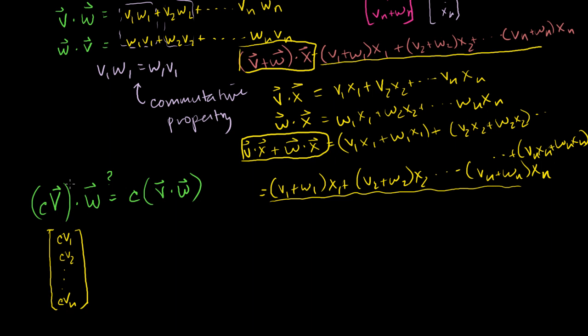And then the vector w, we already know what that is, so dot w is equal to what? It's equal to this times the first term of w, so c v1 w1, plus this times the second term of w, c v2 w2, all the way to c vn wn. Fair enough. That's what this side is equal to.